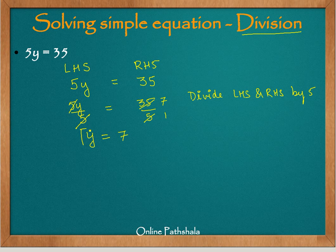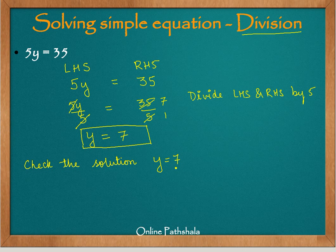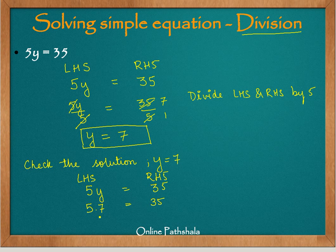This is our solution, but is it correct? We check by substituting y equals 7 in the original equation. We have 5y equals 35; putting in 7 gives 5 multiplied by 7 equals 35, which is 35 equals 35. Therefore y equals 7 is correct and satisfies the equation 5y equals 35.